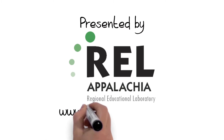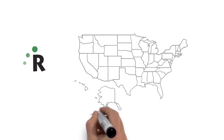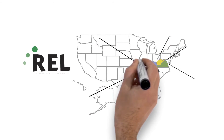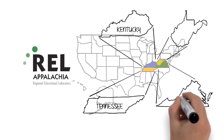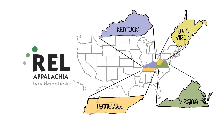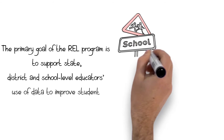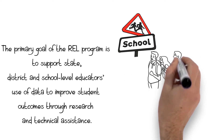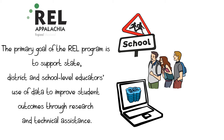REL Appalachia is one of ten regional educational laboratories in the country. We serve education stakeholders in four states: Kentucky, Tennessee, Virginia, and West Virginia. The primary goal of the REL program is to support state, district, and school-level educators' use of data to improve student outcomes through research and technical assistance.